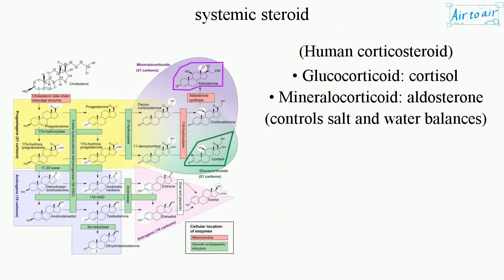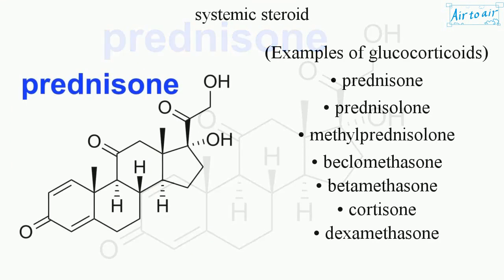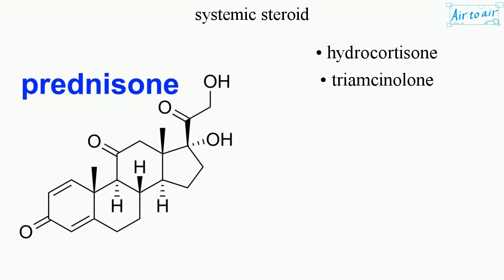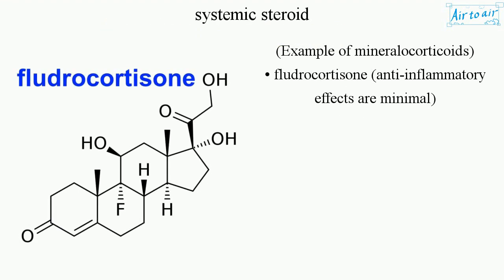Human corticosteroids include glucocorticoids such as cortisol, and mineralocorticoids such as aldosterone, which control salt and water balances. Examples of glucocorticoids include prednisone, prednisolone, methylprednisolone, beclomethasone, betamethasone, cortisone, dexamethasone, hydrocortisone, and triamcinolone. An example of a mineralocorticoid is fludrocortisone, whose anti-inflammatory effects are minimal.